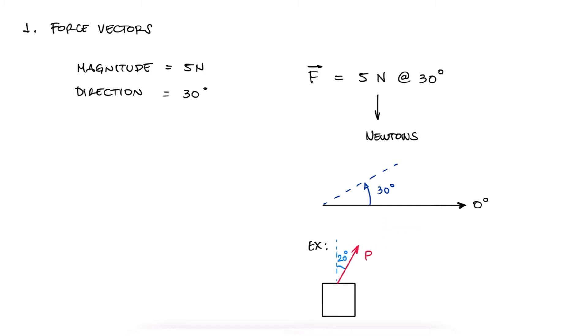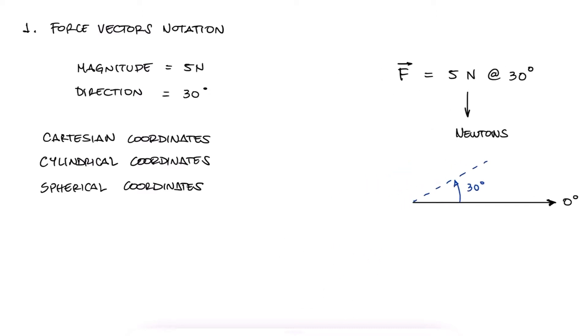Besides this notation, vectors can be represented with their three-dimensional components in Cartesian coordinates, and although we will cover this much later in cylindrical or spherical coordinates too. A force vector can therefore be presented as its components magnitude in the x, y, and z axis.